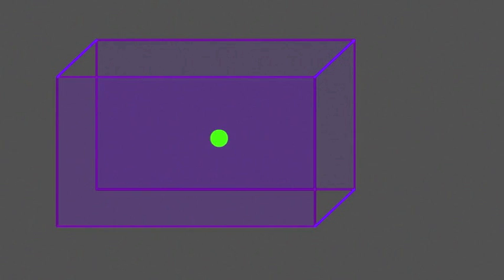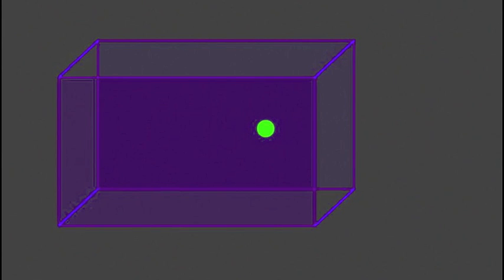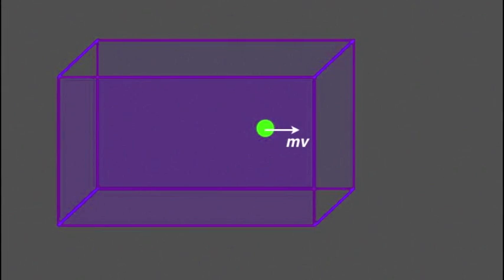In the first instance, imagine a single molecule rebounding backwards and forwards inside a box. If we freeze this molecule just a few moments before it hits the right-hand face of the box, the momentum of the molecule will be mv, where m is its mass and v its velocity.